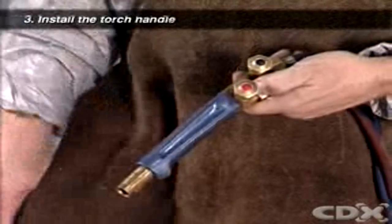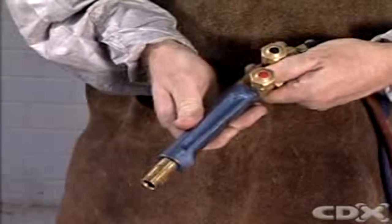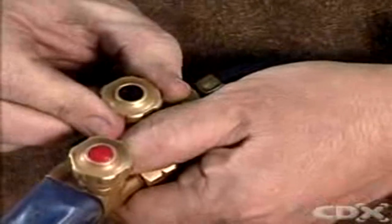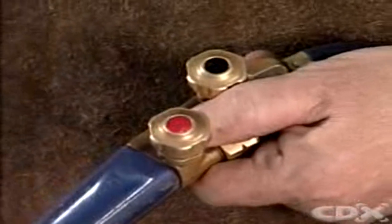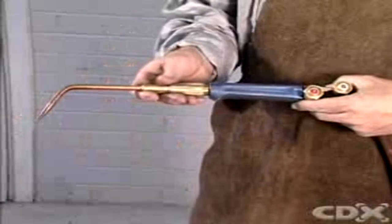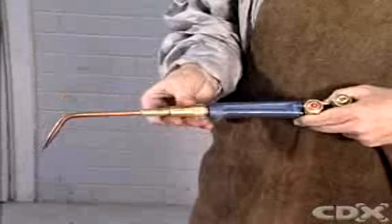The torch handle is the connection between the hoses and the working tips. It consists of a body and two taps. It's used for both welding and heating. Different attachments are connected to the handle to enable welding, heating or cutting.